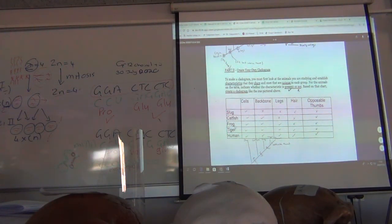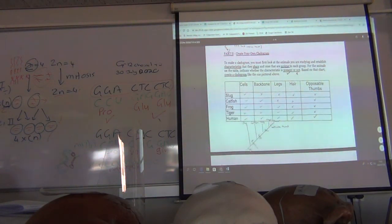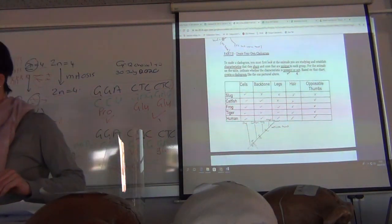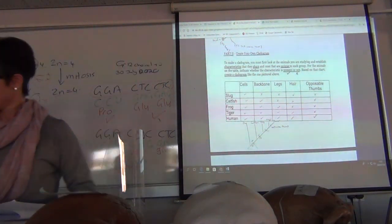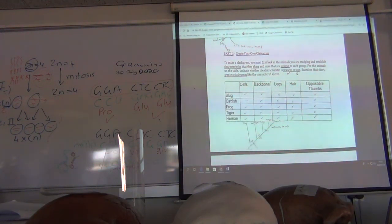And then at the bottom, we actually just work through it. So slugs, catfish, frogs, tiger, and humans, they all have cells. Slugs don't have a backbone. All of the rest do. So backbone is the next milestone. Catfish don't have legs. They've got fins. But everything else does have legs. Slug, catfish, and frogs don't have hair. But tigers and humans do. So hair above. And then opposable thumbs. Only humans have opposable thumbs. So just before humans, opposable thumbs. That's how they work it out.